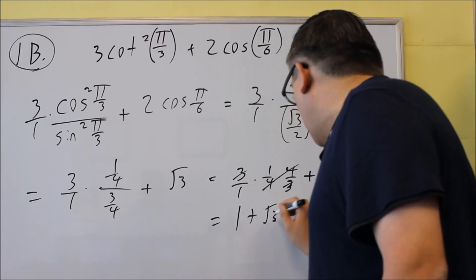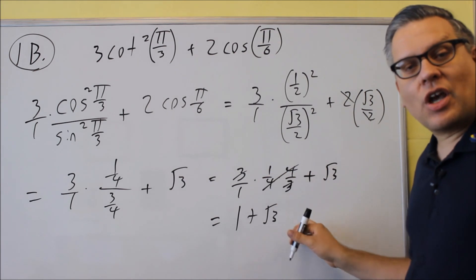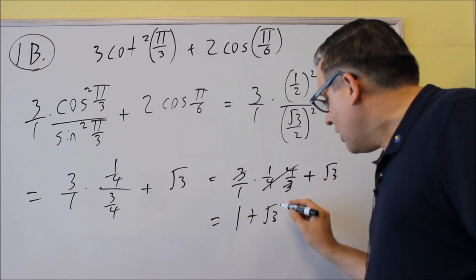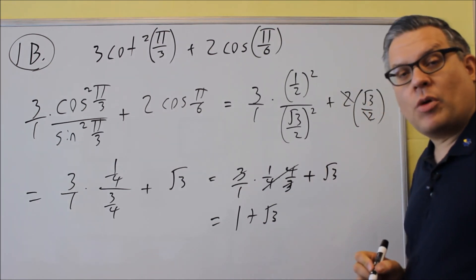Which means that our final answer is going to be 1 plus square root of 3. Now there's no way that we can combine this together anymore because these are not considered like terms. So we'll just leave our answer as 1 plus square root of 3.